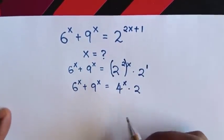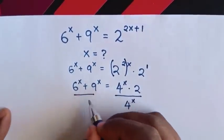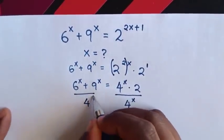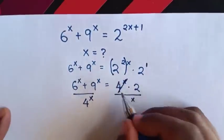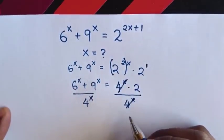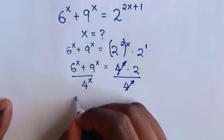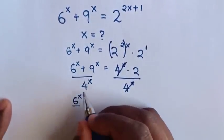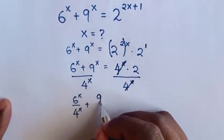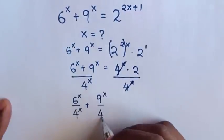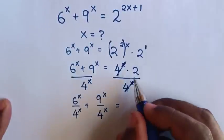In the next step, we divide by 4 power of x on both sides. To simplify, this and this will cancel. So it will be 6 power of x over 4 power of x, plus 9 power of x over 4 power of x, is equal to 2.